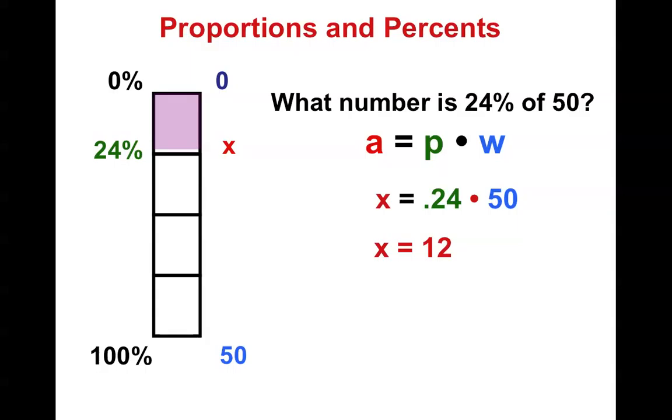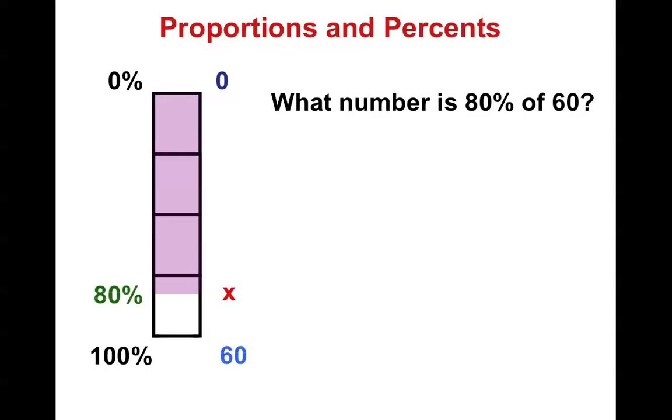Let's have you guys try one. So what number is 80% of 60? All right, I'm back. So hopefully you got this far. If you didn't get this far, I'm going to stop again real quick. All right, I'm back. And here's the formula. So when I think about 80%, I know that that is 0.80 or 0.8, and the whole is going to be 60. So I multiply these two together, and I get 48. It's that easy.